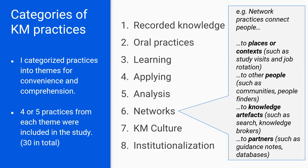I tried to pick four or five practices from each category to use in the survey. Just to blow up one category a little bit to explain what I mean — within each category there are maybe two or three levels of getting down to the practice level. So within networks and network practices, you have different practices to connect people to places or contexts, such as study visits or job rotation.